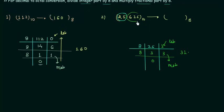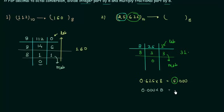We have to multiply the fractional part by 8. So we will multiply 0.625 by 8 and this gives us 5.000. We keep 5 and we are left with 0.000. We multiply 0.000 by 8 again and the result is 0.000. If you repeat the process you get a bunch of zeros, so we stop here. The fractional part for the octal number is .50.